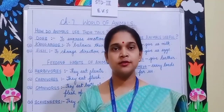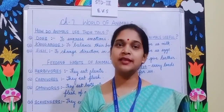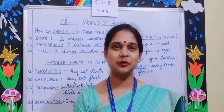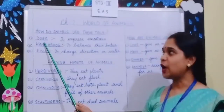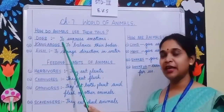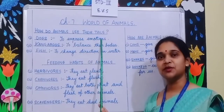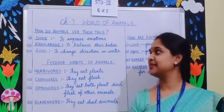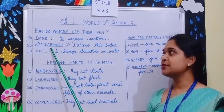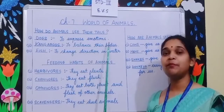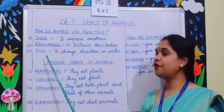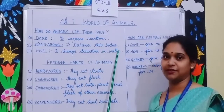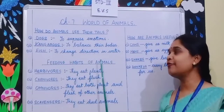You have noticed that many animals have tails. Let's see how some of these animals use their tails. Dogs use their tails to express emotions — when a dog is very happy, it wags its tail. Kangaroos use the tail to balance their bodies. Fish use their tails to change direction in water.